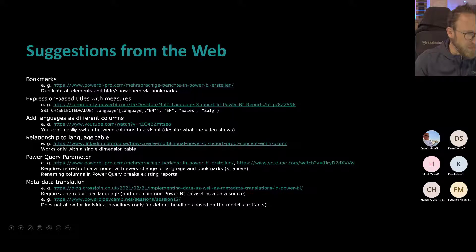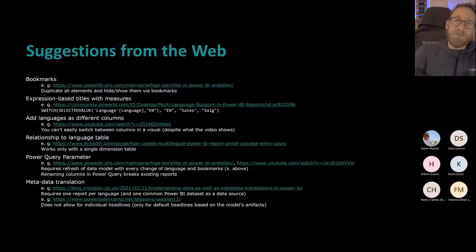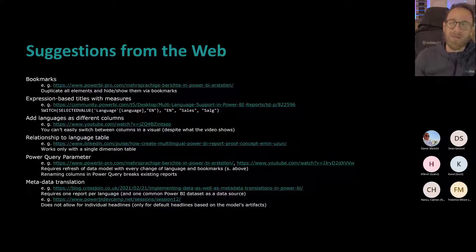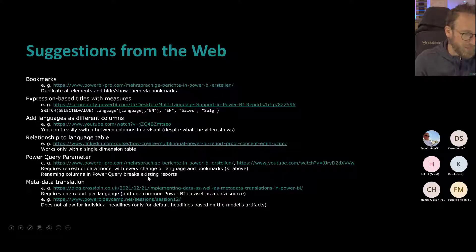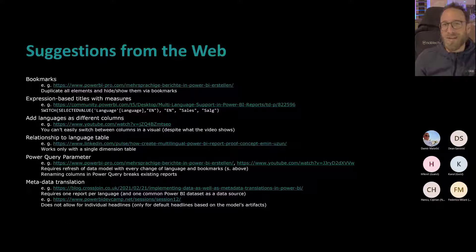Then there are other things where you change the columns, like the Power Query parameter approach, where you change within Power Query the content or even the name of the columns. But if you change the column names in Power Query, this means you also break your reports because the reports will refer to a column that is no longer there. So this also did not really work at scale. Then there's one I really like — the relationship with the language table — but as shown in this exercise, this only works with one single dimension table, and my customer has more than one.